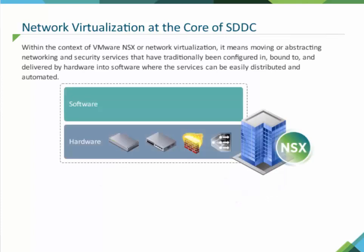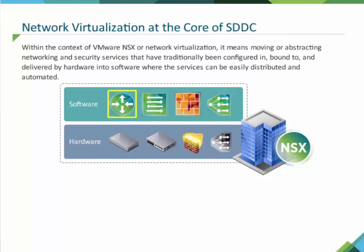Within the context of VMware NSX and network virtualization, it means moving or abstracting networking and security services that have traditionally been configured in, bound to, and delivered by hardware into software, where the services can be easily distributed and automated. Common examples of these services are routing, switching, firewalling, and load balancing.